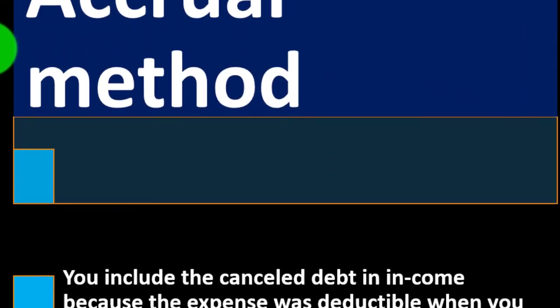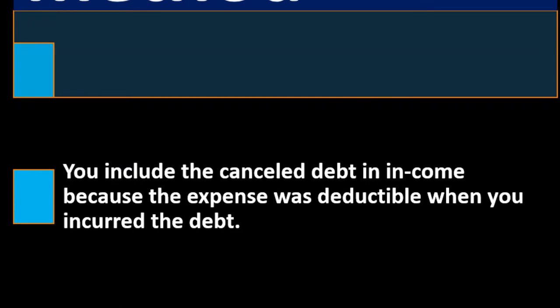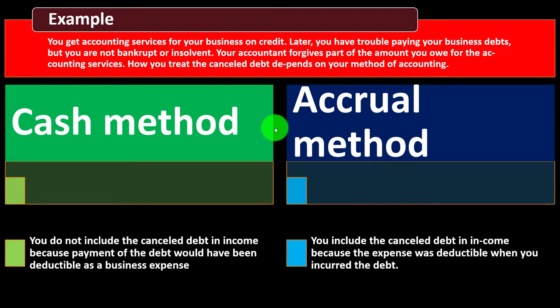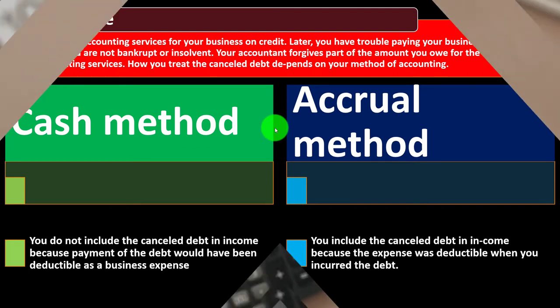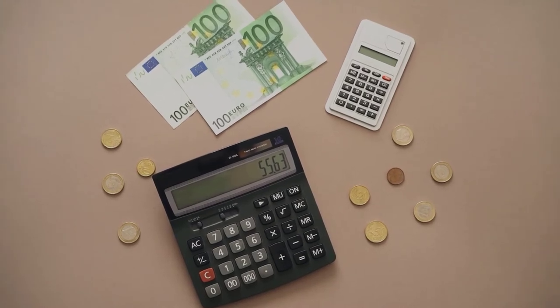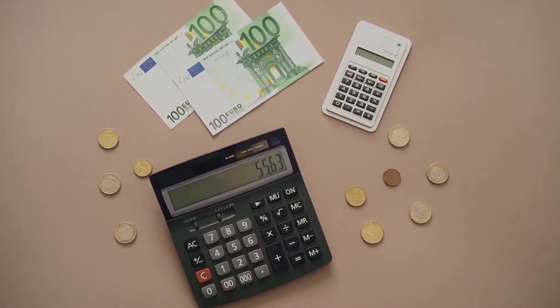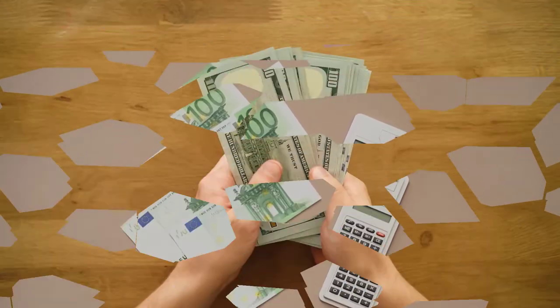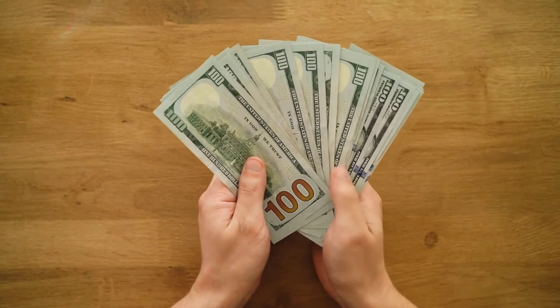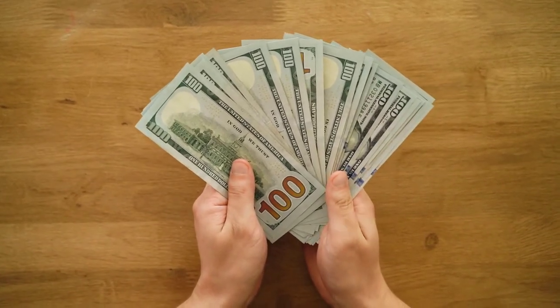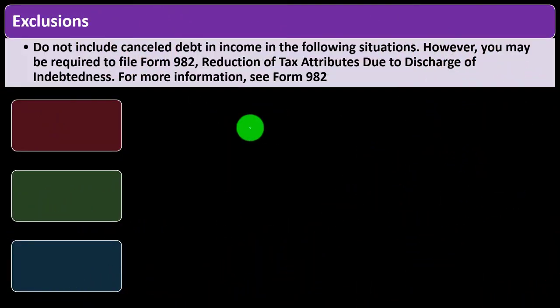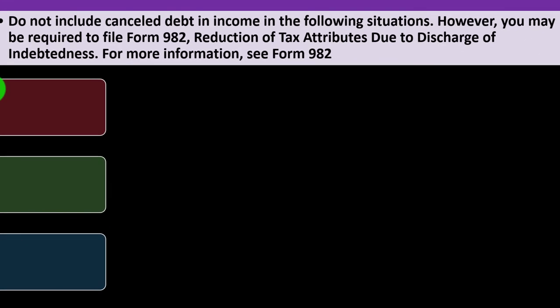On the accrual method, you include the canceled debt in income, because the expense was deducted when you incurred the debt. For example, if the services happened in the prior year and you're on an accrual method, you got the expense when the thing actually happened — so when they canceled the debt the following year, you would have to record it as income because you got the benefit of the expense.